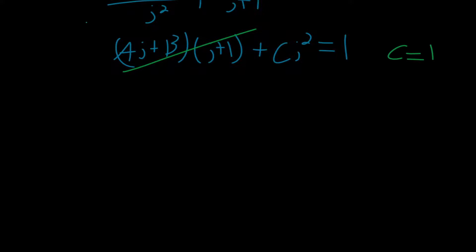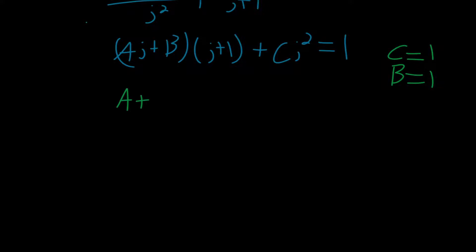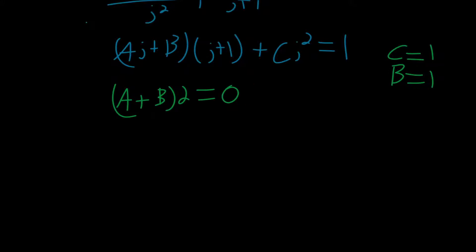Plugging in j equals 0: the c term vanishes, a also vanishes, leaving b equals 1. Then plugging in j equals 1 with known b and c: (a plus b) times 2 plus c equals 1. Since c equals 1, those cancel, giving a plus b equals 0, so a equals negative b equals negative 1.